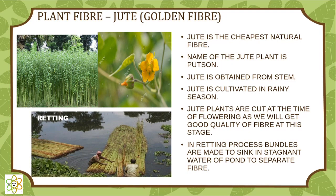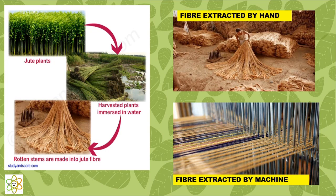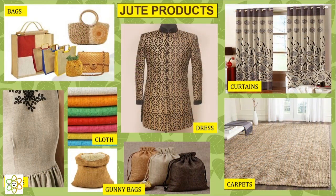In the retting process, bundles of jute plants are made to sink in stagnant water of a pond to separate the fiber. Fiber is extracted by hand and also by machine. Harvested plants are immersed in water, and the rotten stems are made into jute fiber. Jute products include bags, cloth, dress, gunny bags, curtains, and carpets.